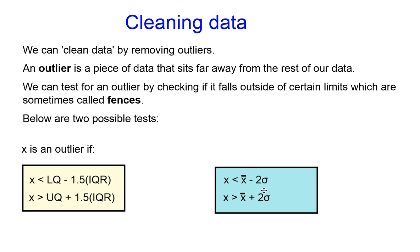We can also use this definition: if a value is more than two standard deviations away from our mean, we say it's an outlier. So it's an outlier if it's less than the mean minus two standard deviations, or greater than the mean plus two standard deviations. Sometimes we use three standard deviations or more than 1.5 IQRs, but these are the definitions we'll use in this video.